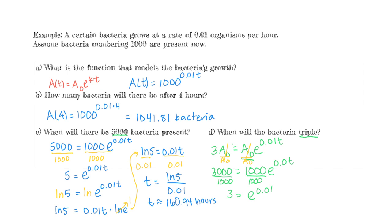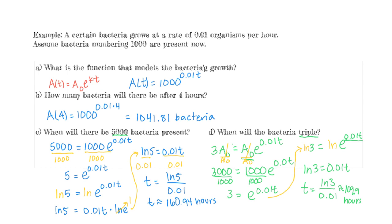Now we take the natural log of both sides: ln(3) = ln(e^(0.01T)). The exponent gets brought down and ln(e) cancels out. So when we solve for T, we get T = ln(3) / 0.01, which gives a decimal approximation of 109.9 hours. That's how long it'll take to triple.